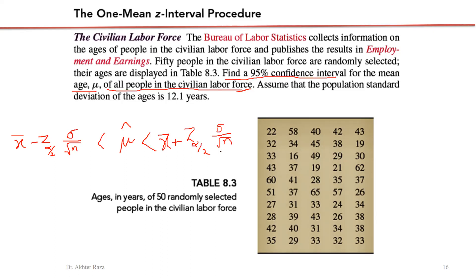We have to calculate the standard error. The sigma is known in this example — assume the population standard deviation is 12.1 years. If population standard deviation is not given, we calculate the sample standard deviation instead. Since sigma is known, we apply the z-formula for the confidence interval. Sigma is 12.1, and x̄ can be computed from the data. The z value is taken from the z-table.